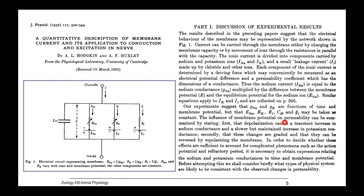The influence of the membrane potential on permeability can be summarized by stating, first, that depolarization causes a transient increase in sodium conductance and a slower but maintained increase in potassium conductance. Secondly, that these changes are graded and can be reversed by repolarizing the membrane.